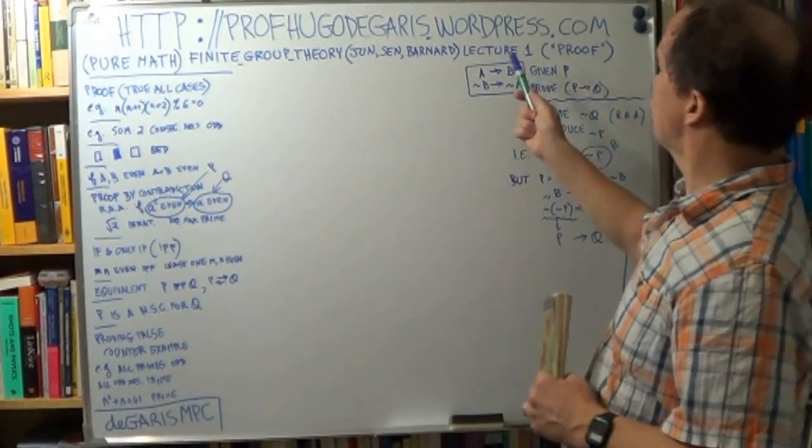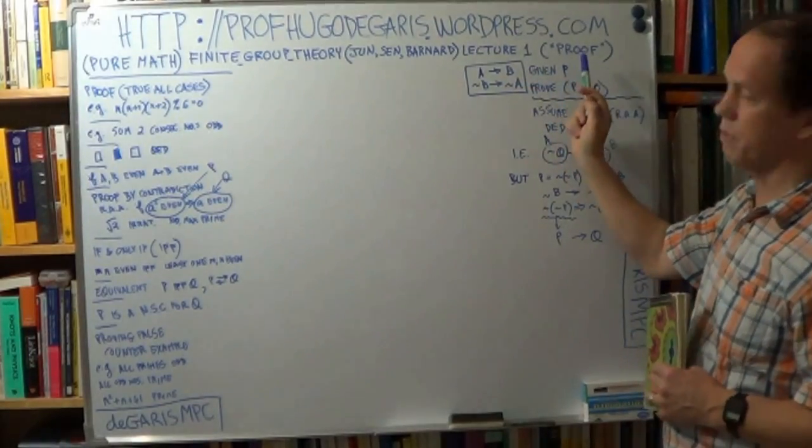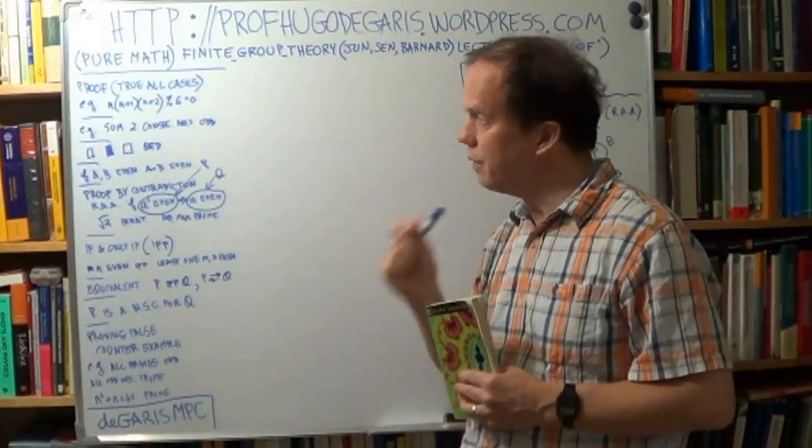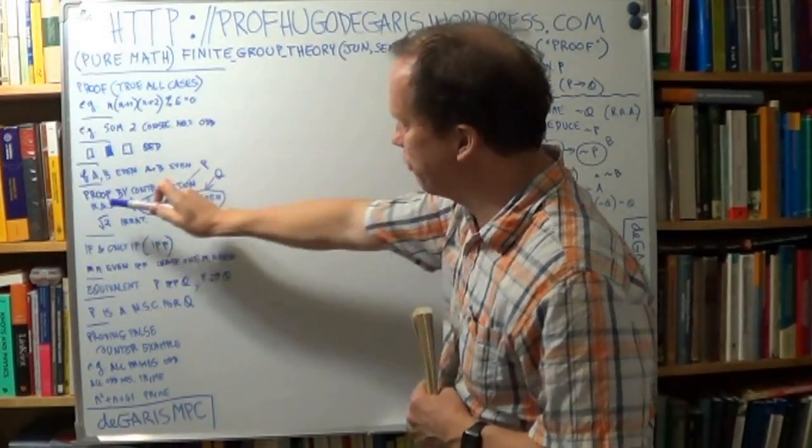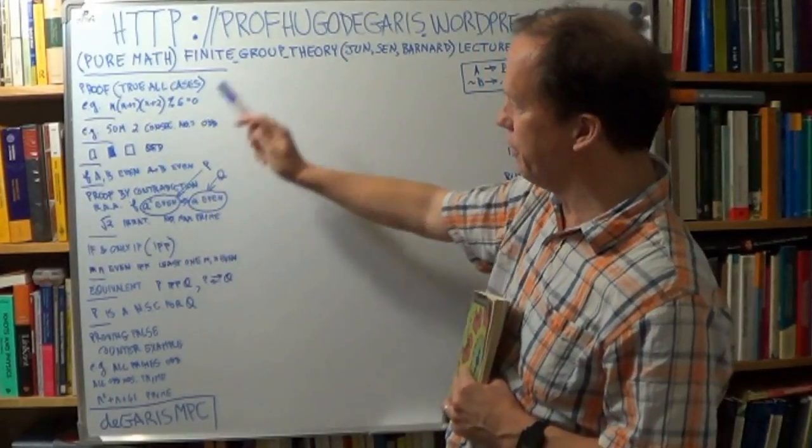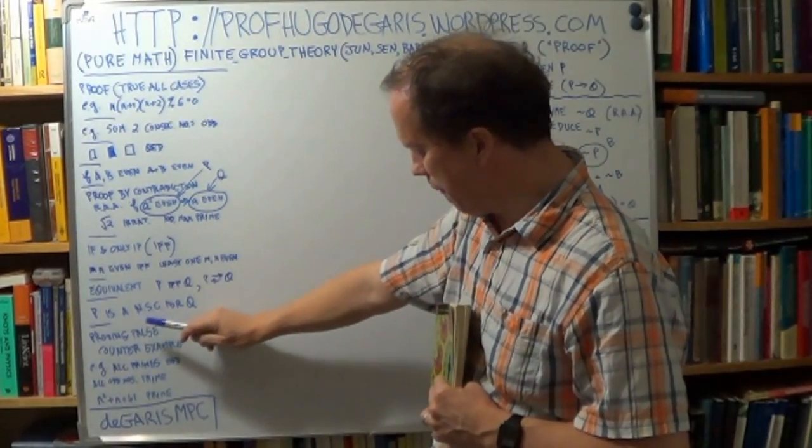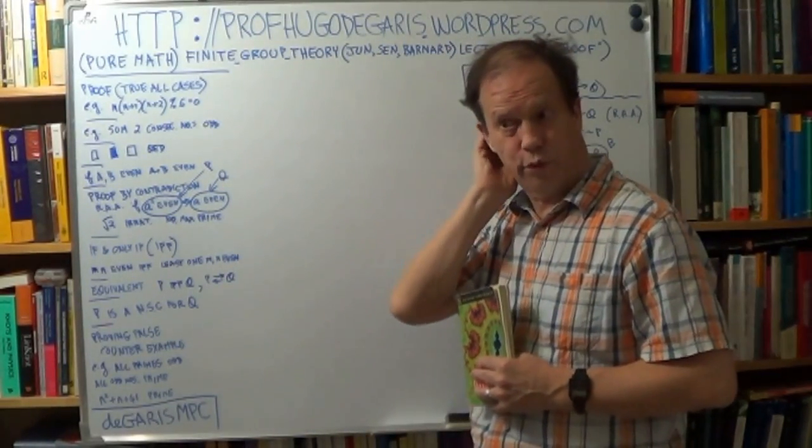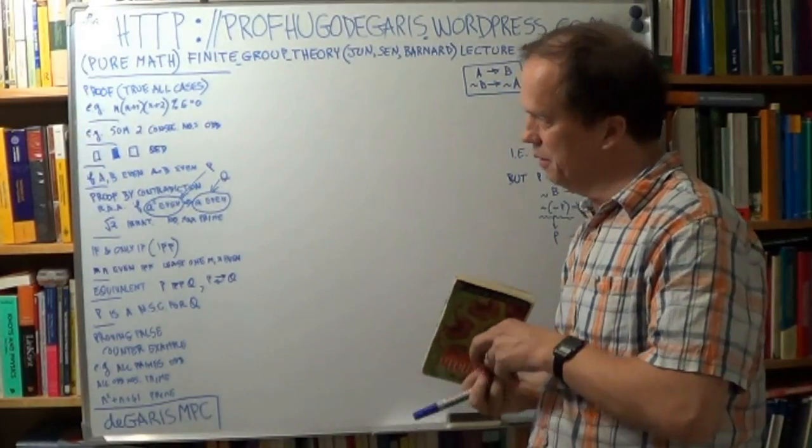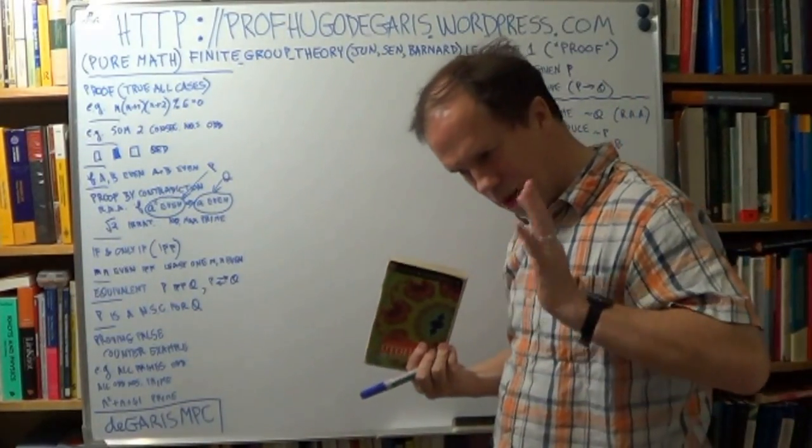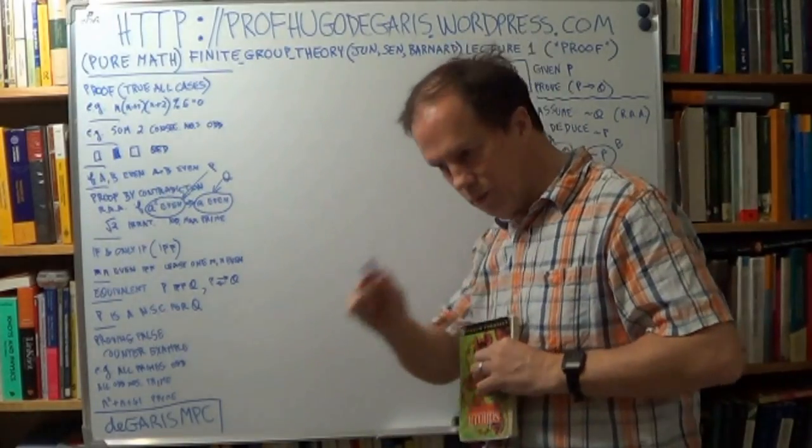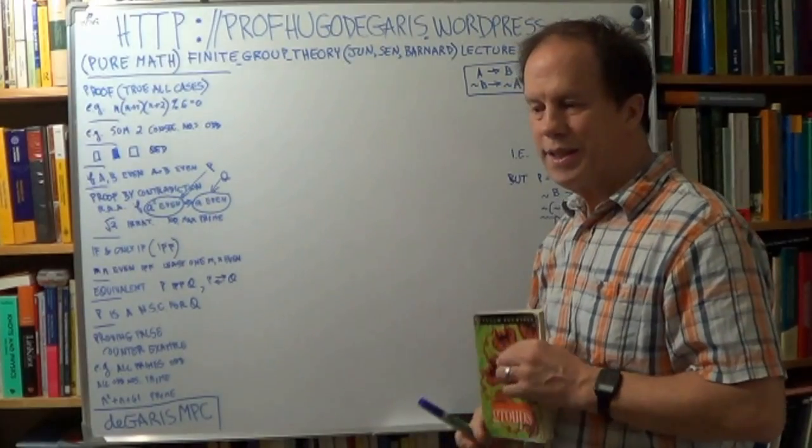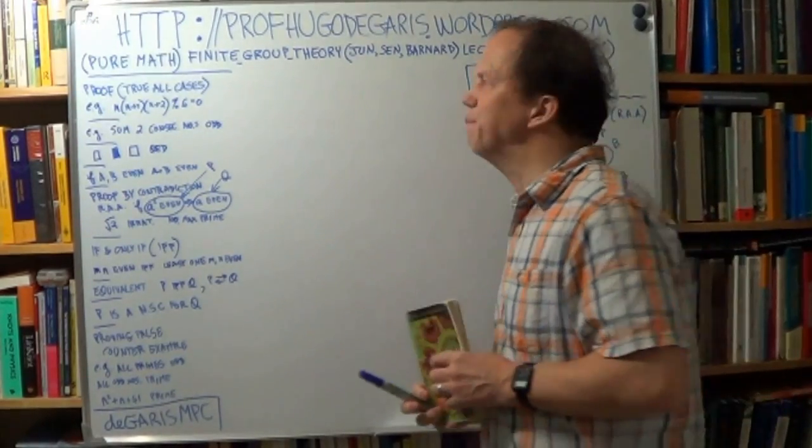So this lecture is lecture one. The topic of the lecture is proof, the nature of proof in pure mathematics. Various techniques, in other words. For example, proof by contradiction, the nature of if and only if type statements, or necessary and sufficient condition, and proving something false. Techniques of proof. So fairly elementary if you've done this kind of stuff, but I'm trying to be consistent and thorough. We'll just go up step by step. You may find this first lecture fairly easy, but towards the end of the book it gets a bit harder.